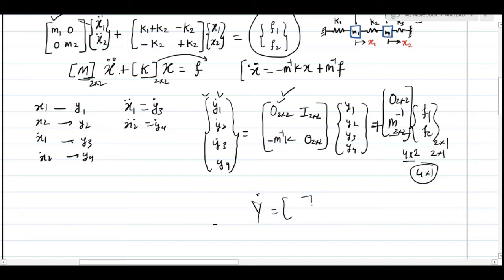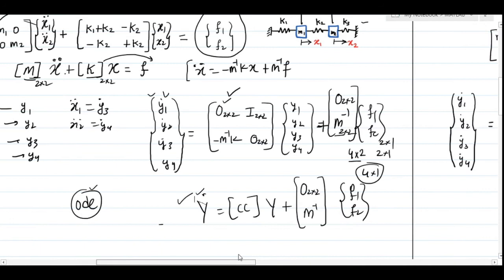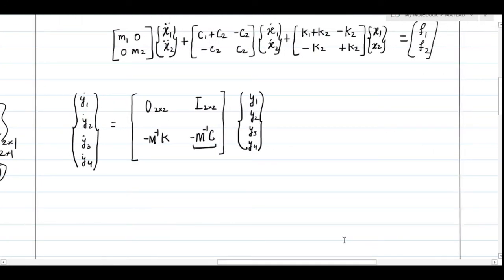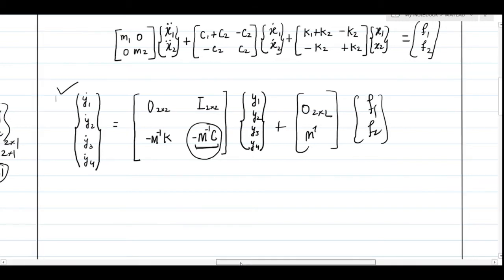The full state space equation is: y-derivative = C·y + [null matrix (2×2); M⁻¹]·[F1; F2]. This is supplied to the ODE solver in MATLAB to get the system response. For the damped system the structure is similar, but the coefficient matrix C also includes terms corresponding to the damping matrix. Again, a 2×2 null matrix and M-inverse multiply the force terms F1 and F2.